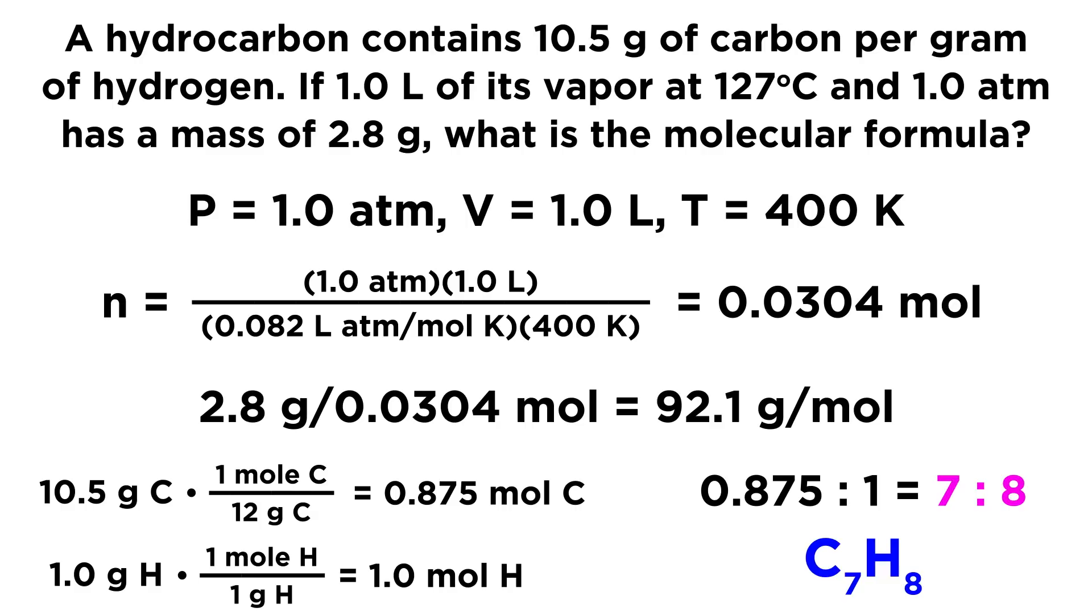And as it happens, this empirical formula unit, C7H8, does have a molecular mass of 92.1. Therefore, we know that the empirical formula is also the molecular formula in this case. And so C7H8 will be our answer.